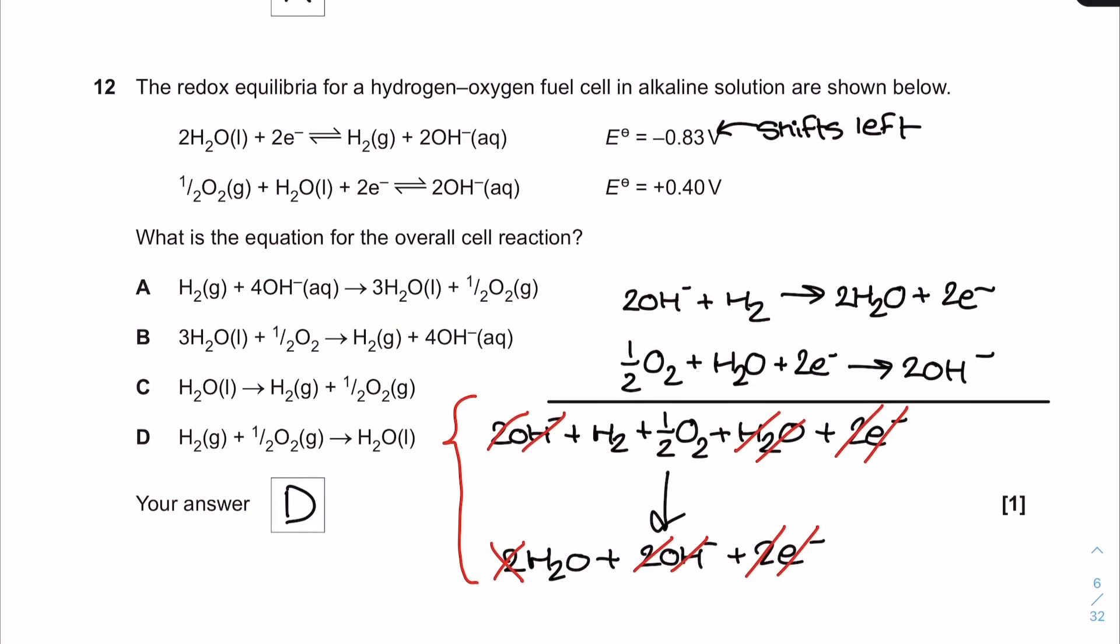Question 12. The redox equilibria for a hydrogen-oxygen fuel cell in alkaline solution is shown below. What's the equation for the overall cell reaction? You might actually just know this - the hydrogen-oxygen fuel cell has the combustion of hydrogen as its overall equation. But if you did combine the half equations: I've moved the top equation out because it had a more negative electrode potential, shifted it to the left in the oxidation direction, maintained the direction of the other one, combined them together, cancelled down the hydroxides, water and electrons, giving the overall equation which is answer D.